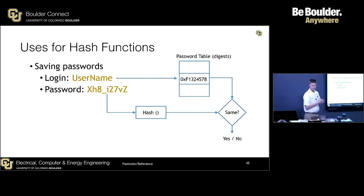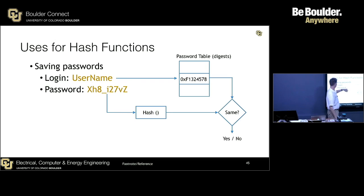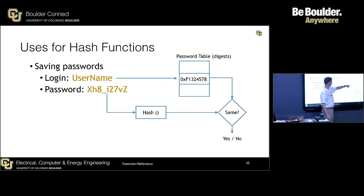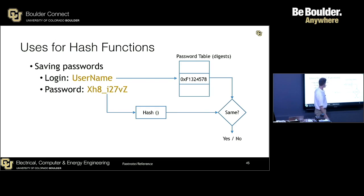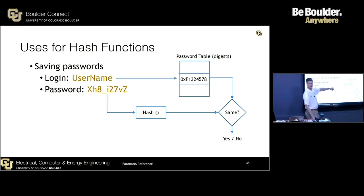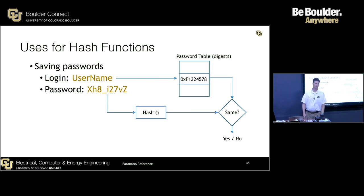Hash functions can also be used to store passwords. Imagine there's a website where you have a username and a password. When you set up your account, your password was run through a hashing algorithm, producing a value like F1324578, which is stored in a password table. When you log in, the system uses your username to look up the stored hash, then hashes the password you just typed and compares the two. If they match, you're granted access; if not, you're rejected.